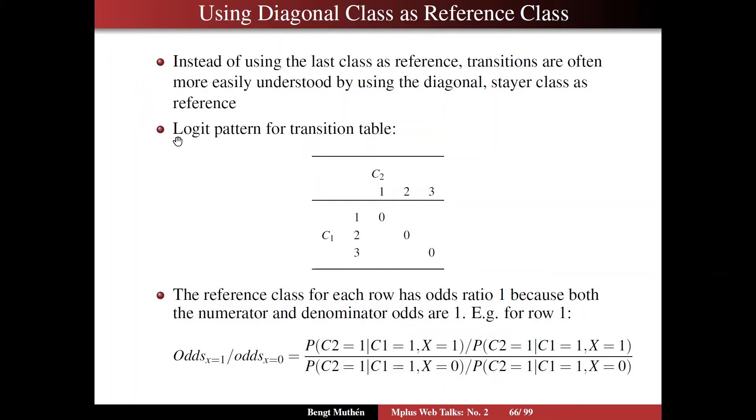And then you have a logit pattern like this, that is, you put the zeros on the diagonal instead of in the last column. And the reference class for each row, of course, has odds ratio 1, because both the numerator and denominator are the same, you divide in the numerator and the denominator is the same.